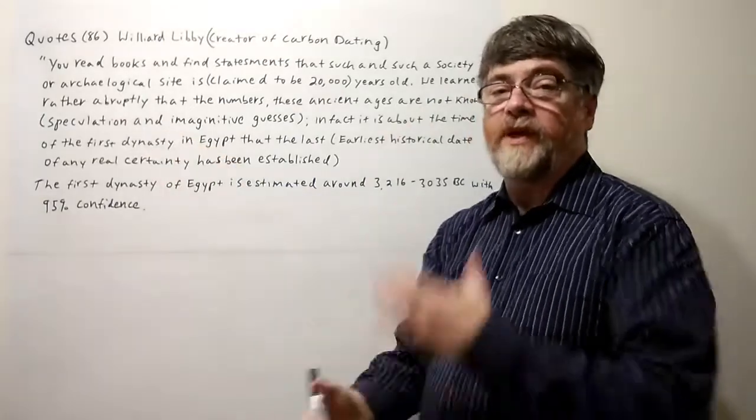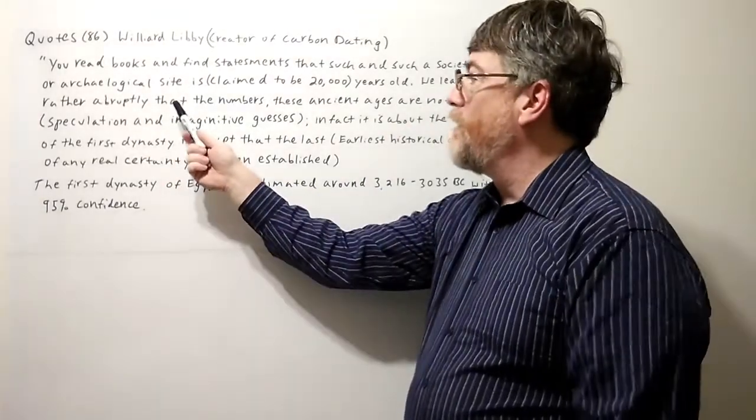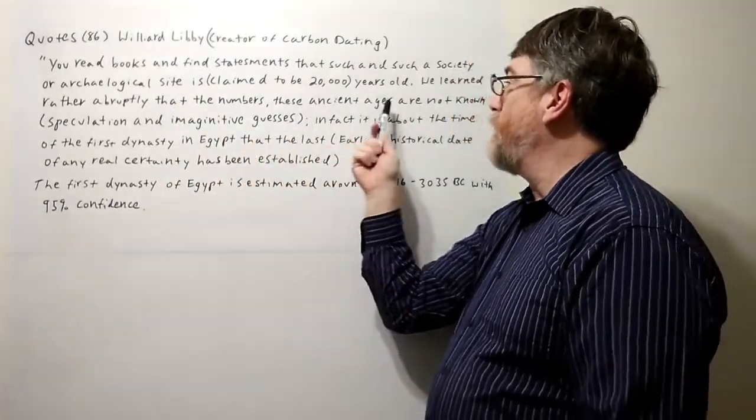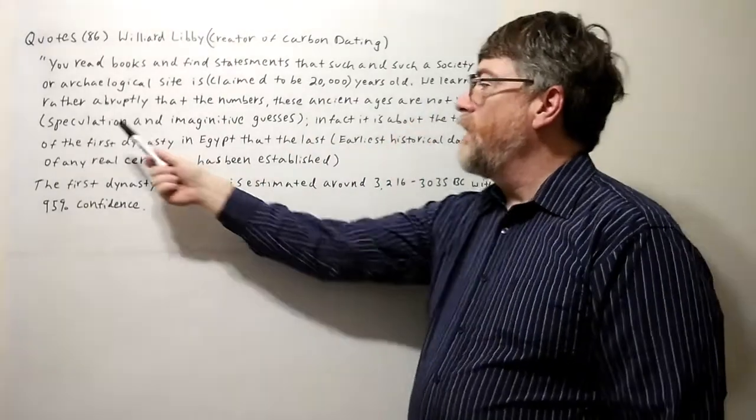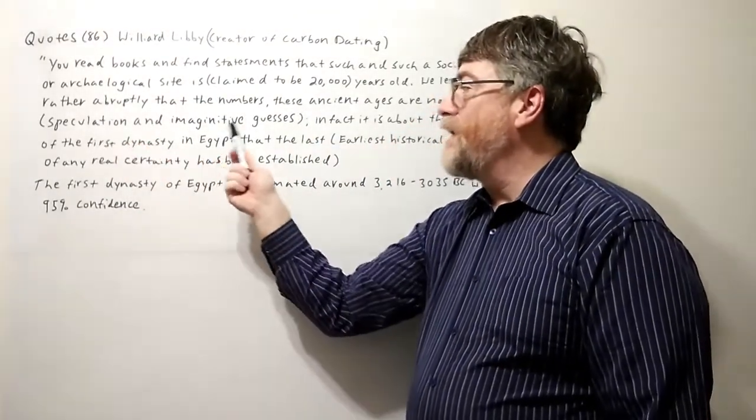We learned rather abruptly that these numbers, these ancient ages, are not known. They're speculation and imaginative guesses.